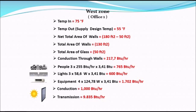West zone office number one has a total area of 180 square feet, minus 50 square feet for the glass area, giving 130 square feet of wall area and 50 square feet of glass area. The total wall conduction is 217.7 BTU/hr, three people working is equivalent to 765 BTU/hr, equipment is equivalent to 1702 BTU/hr, glass conduction load is 1000 BTU/hr, and the glass transmission load is 9835 BTU/hr.